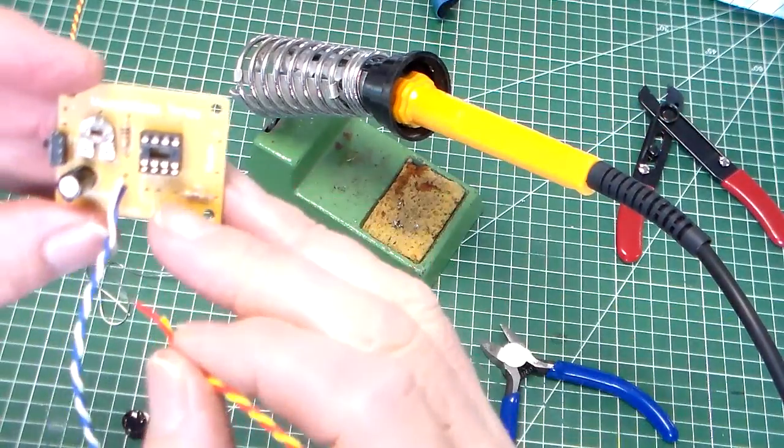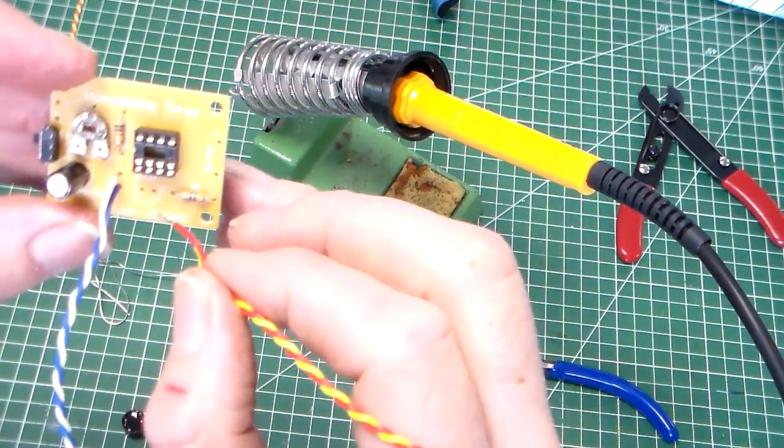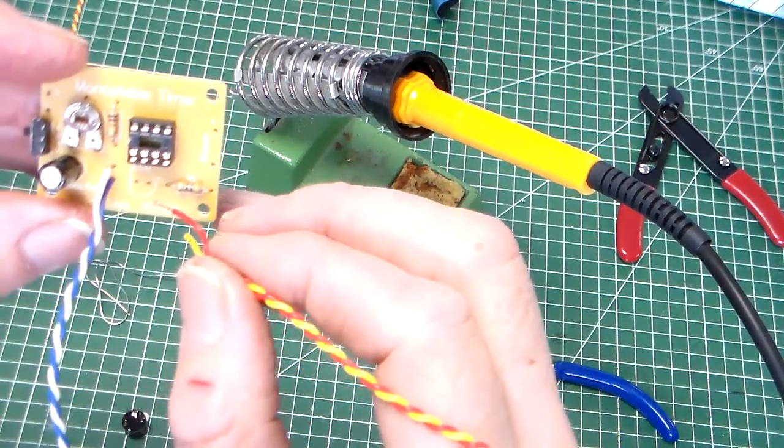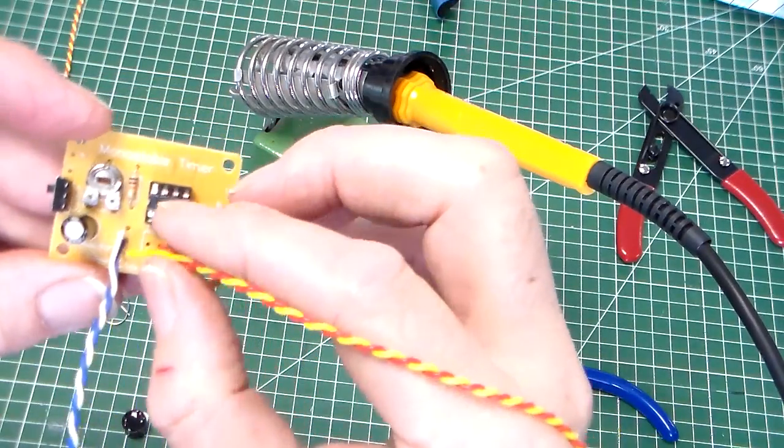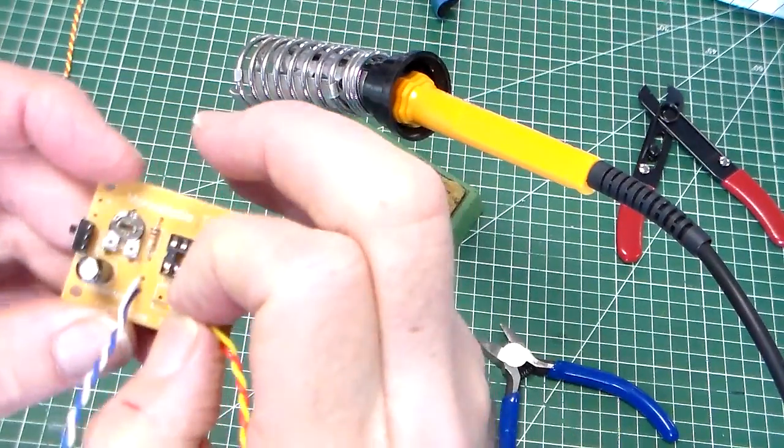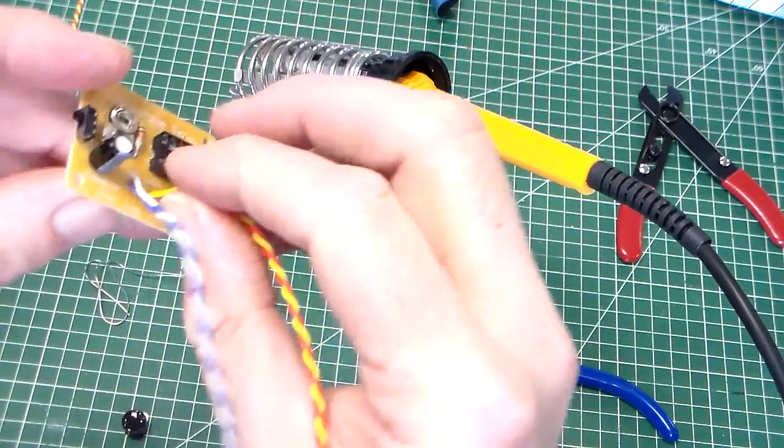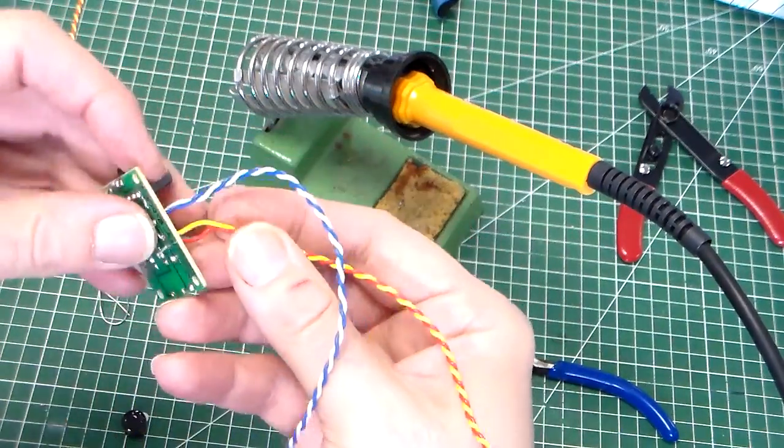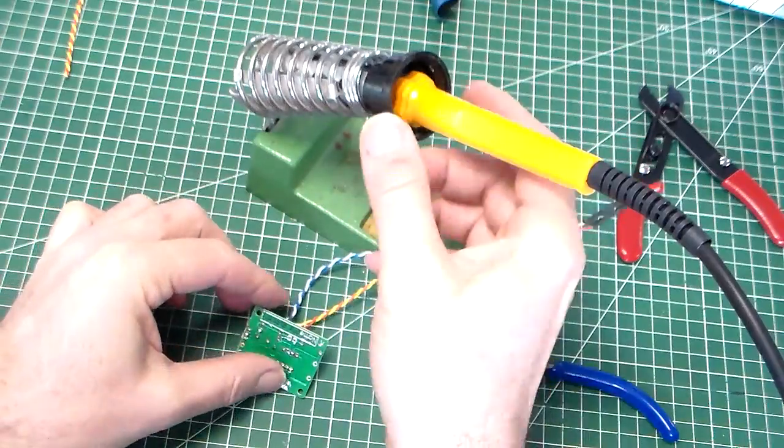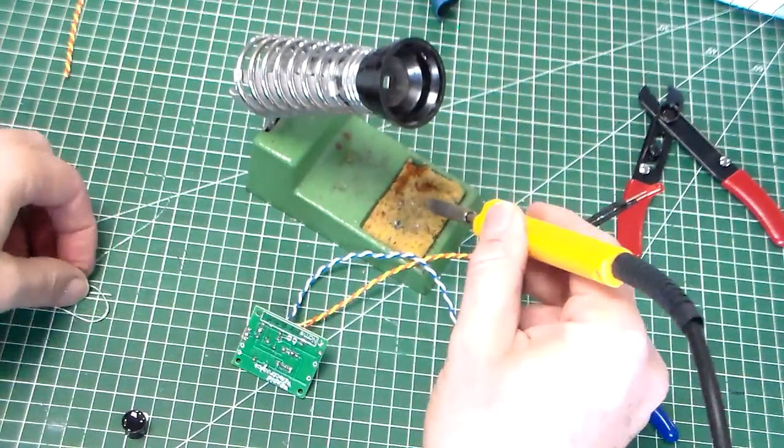For the LED, we have LED marked on the screen print, and because I know that the red is positive, that can go to the positive connection. I can just move those over and then solder those.